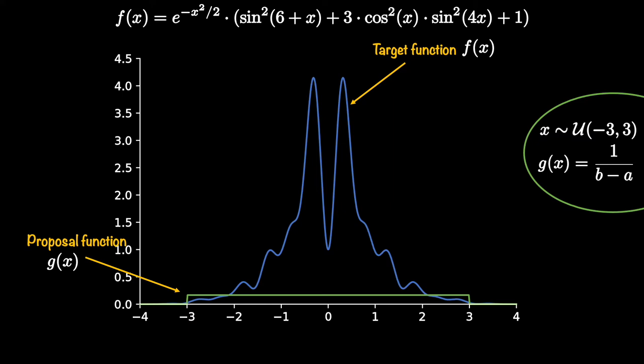I'm using G as a symbol for the proposal distribution function. And before we go further, there is one adjustment we need to make to our proposal function and it is to scale it such that it encapsulates our target function.